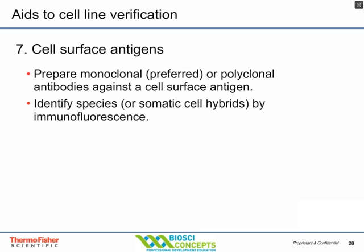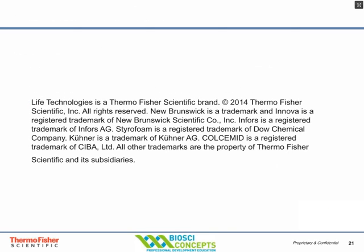Cell surface antigens are another good way to detect intra- or inter-species cross-contamination. Understanding the biology of the cells you're using is key — liver cells should have liver proteins, kidney cells should have kidney-specific cell surface antigens. Using monoclonal antibodies against specific cell surface antigens can determine intra- or inter-species cross-contamination, since chromosome and mitochondrial analyses alone can't distinguish, say, a human liver cell from a human kidney cell. You might also use biochemical assays. I hope this has been helpful — thank you for your participation.